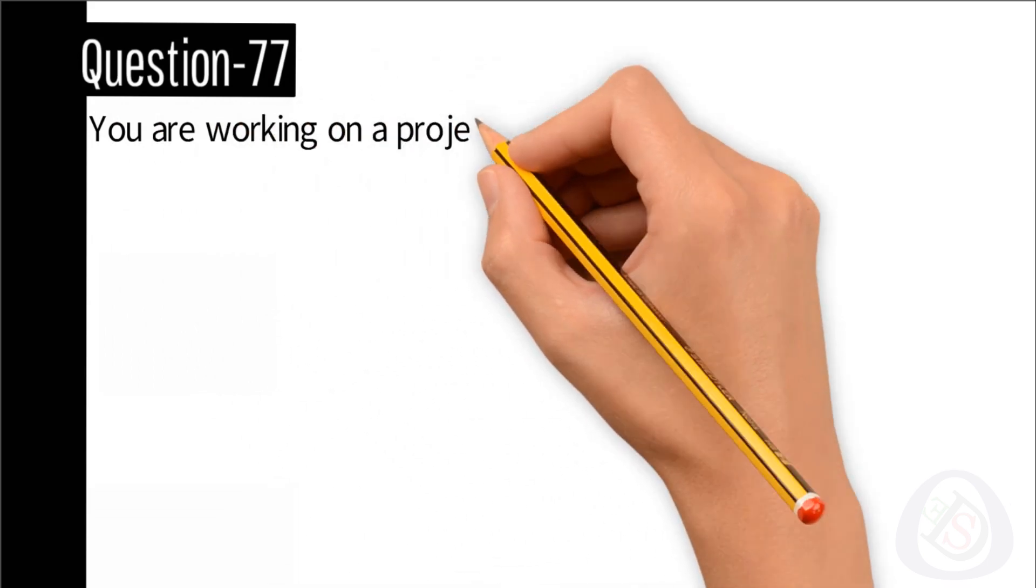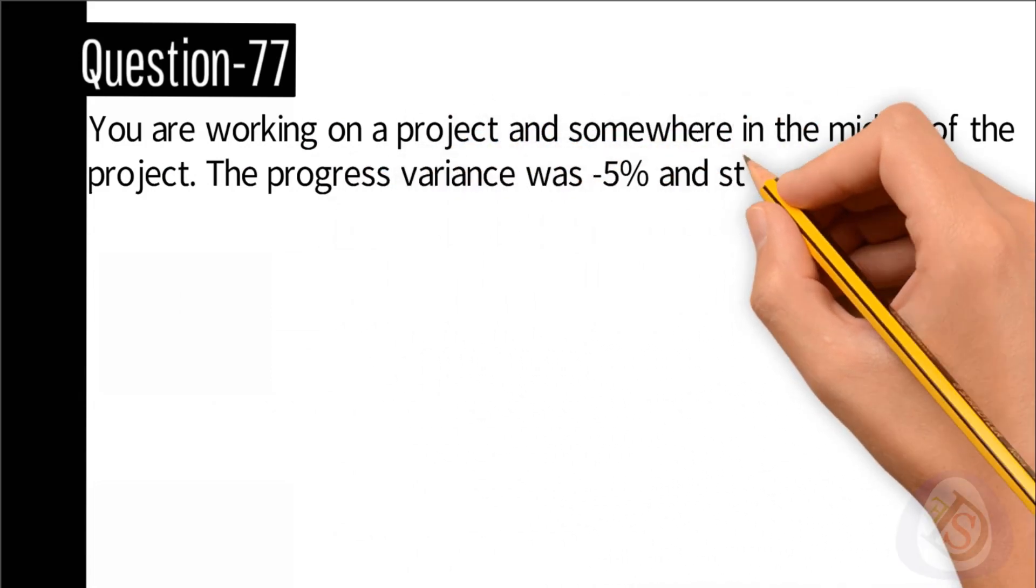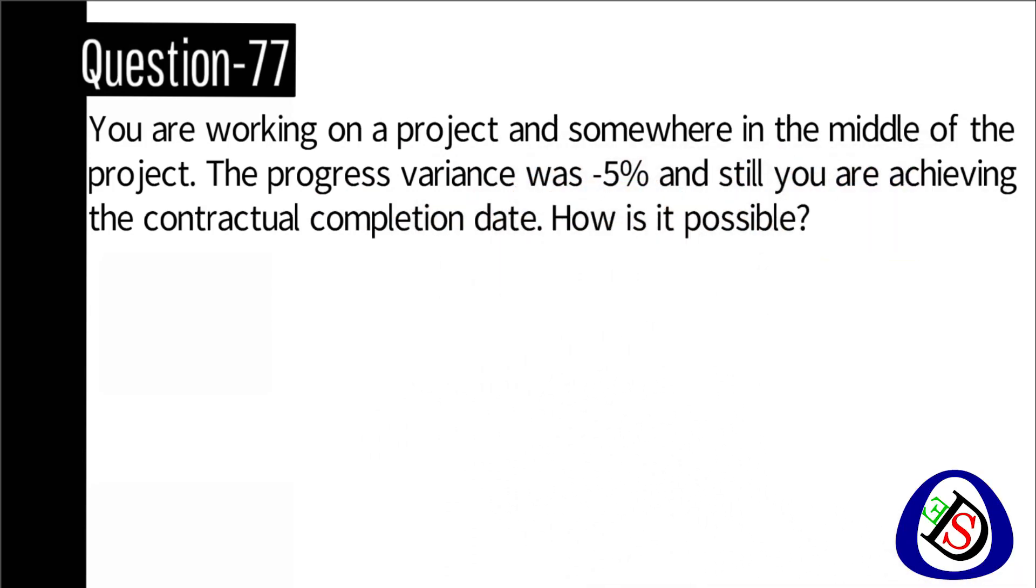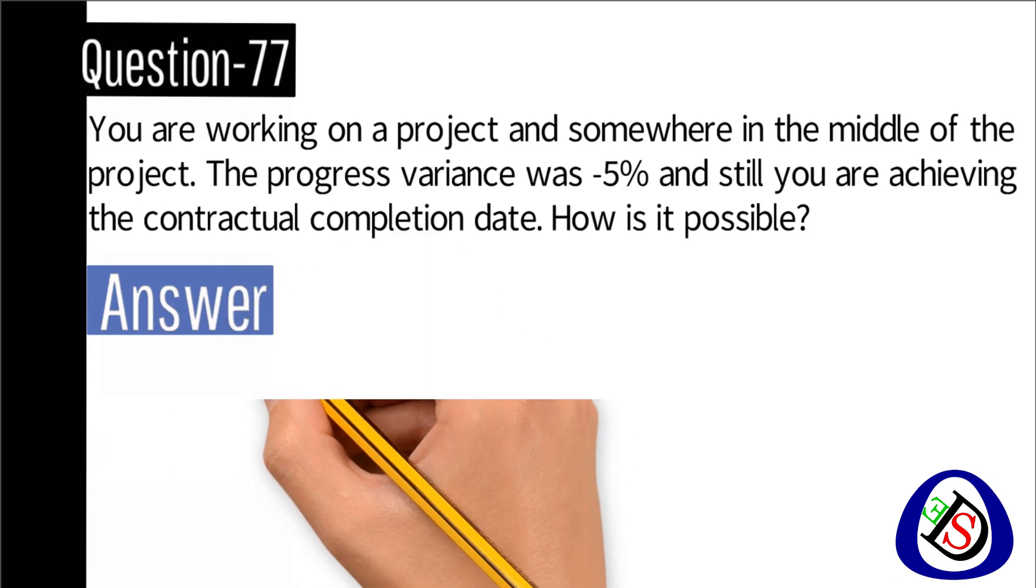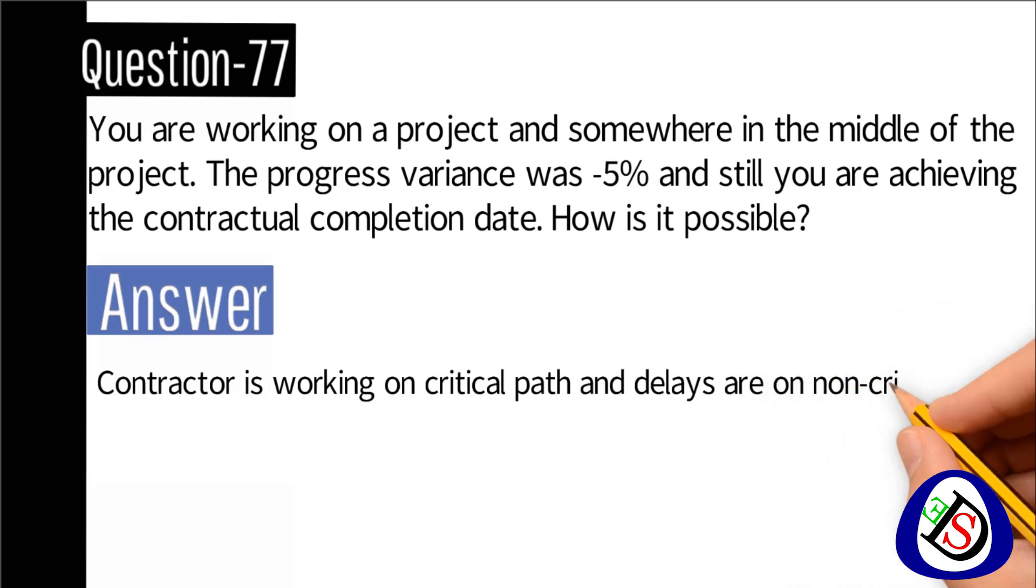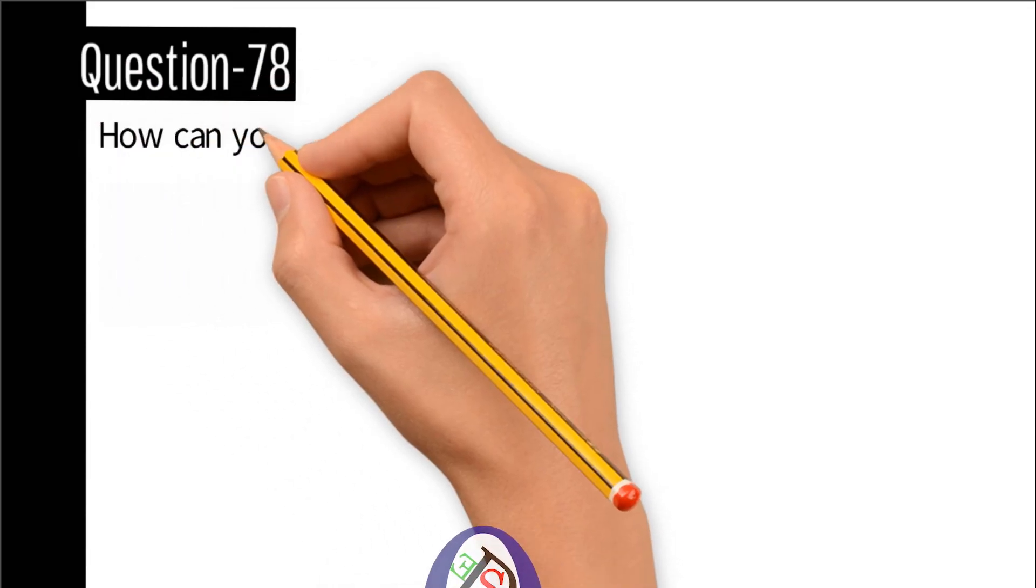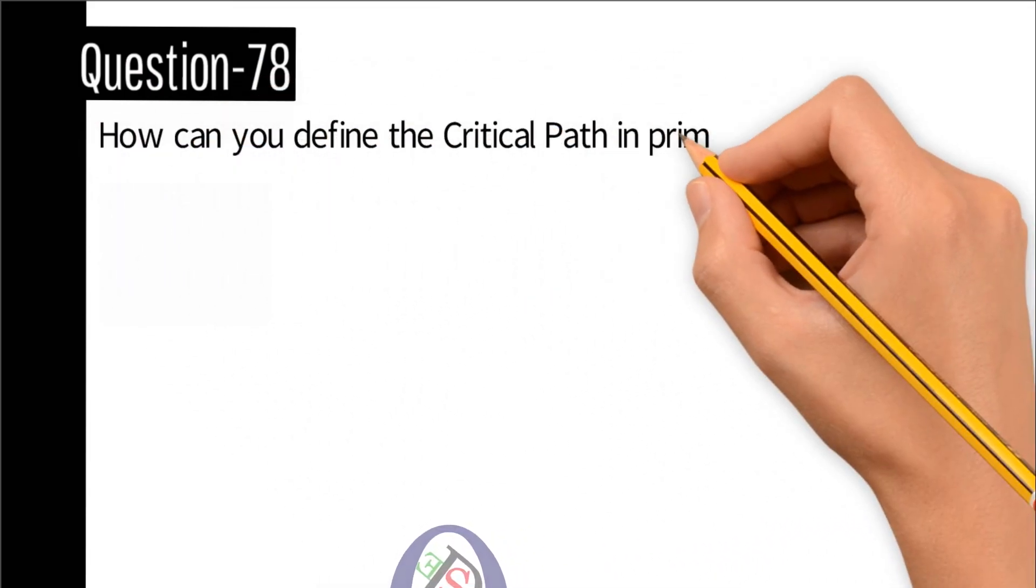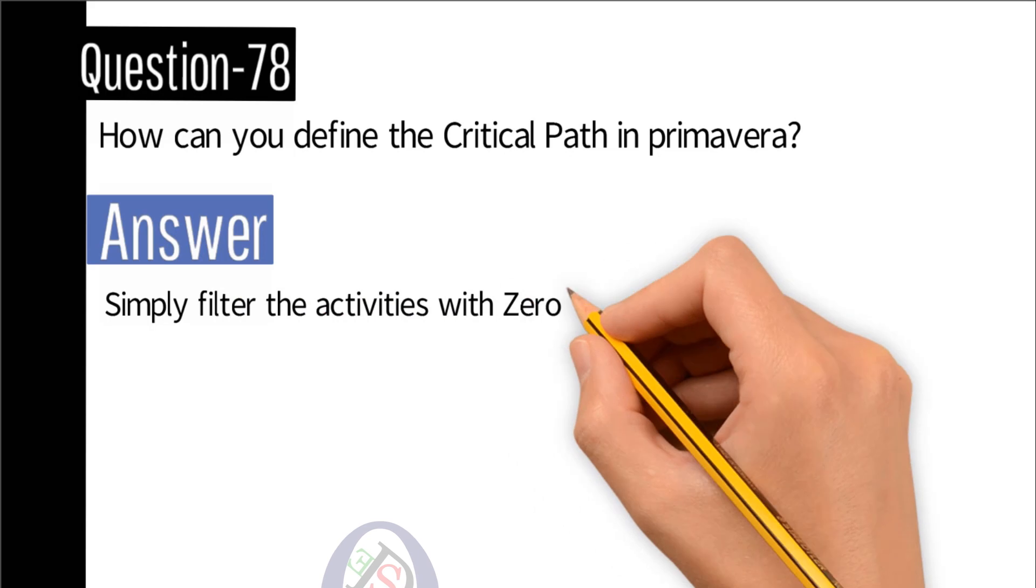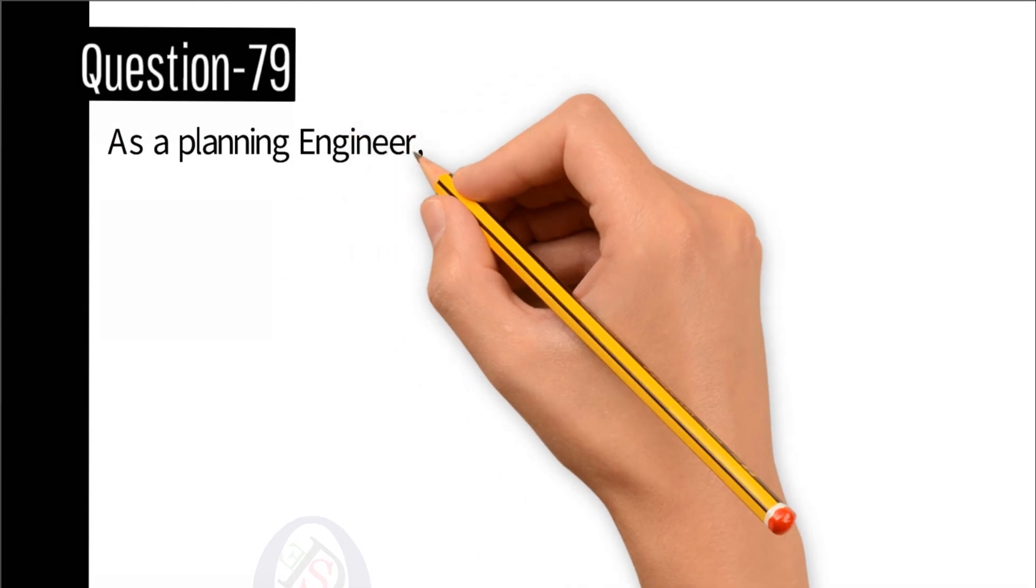Question number 77: You are working on a project and somewhere in the middle of the project the progress variance was minus 5%, and still you are achieving the contractual completion date. How is it possible? Answer: Contractor is working on critical path and delays are on non-critical activities. Question number 78: How can you define the critical path in Primavera? Answer: Simply filter the activities with zero float.